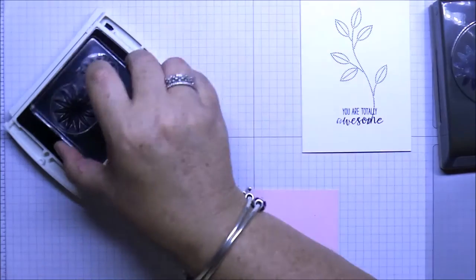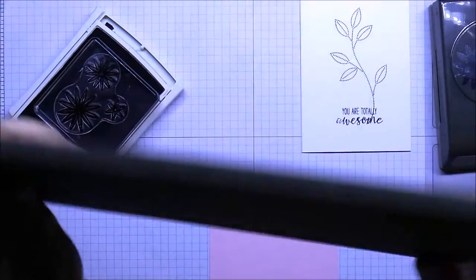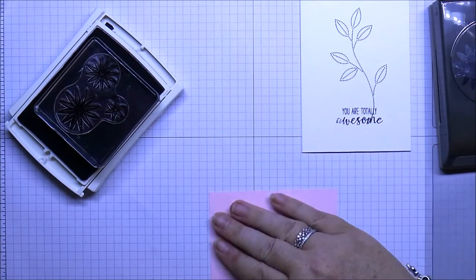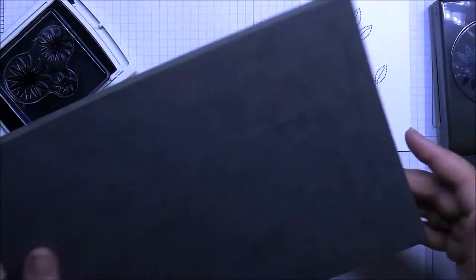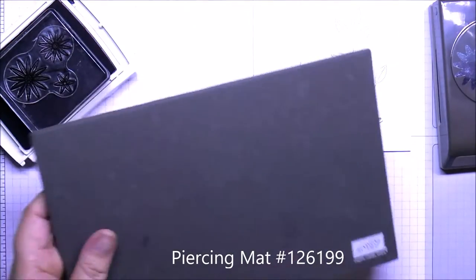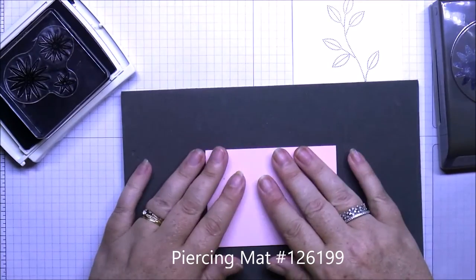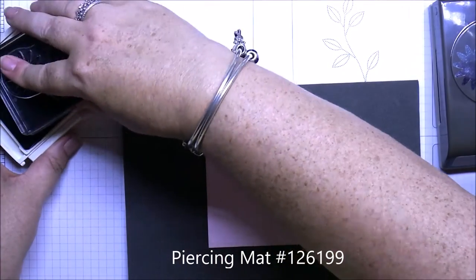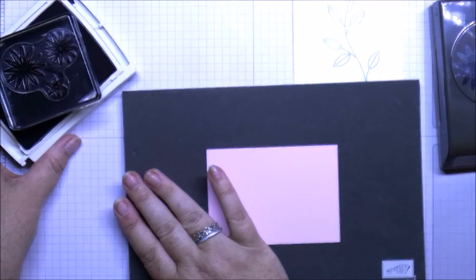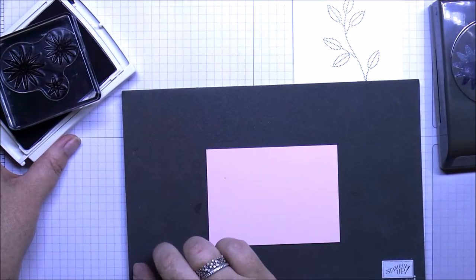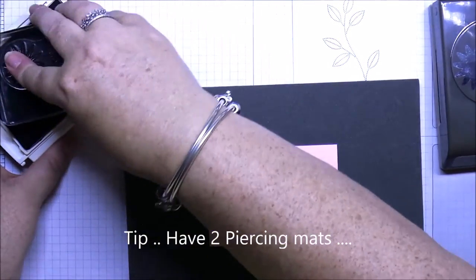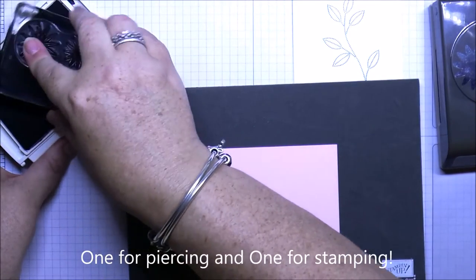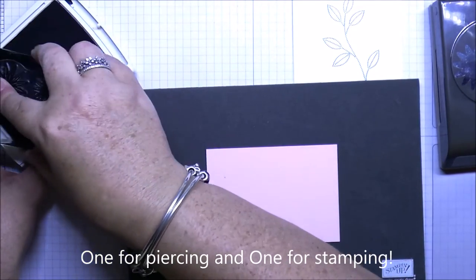Okay, so now we're going to ink up our flower stamp. Now with your photopolymer, if you're having problems getting a good clean design with your stamps, you can purchase one of our piercing mats. Just pop the card on there. If you're going to do this, keep one for piercing and one for stamping, just keeps them nice and clean and they're only like I think about eight or nine dollars, so they're not expensive.